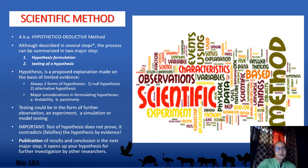Testing of hypothesis should be carried out in the form of additional field observation, an experiment, a simulation, or model testing. What is important is that a test of hypothesis does not prove — rather it contradicts or falsifies the hypothesis by the evidence gathered. The next step after hypothesis testing is publication of your results and conclusions, which opens up your hypothesis for further investigation by other researchers.